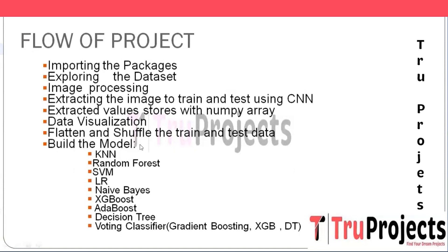The next step is building the models. The first is KNN (K-Nearest Neighbors), a simple and effective classification algorithm that classifies data points based on the majority class among the K nearest neighbors. In this project, it is used to classify brain tumor images based on features extracted from the CNN model. The next is Random Forest, an ensemble learning method combining multiple decision trees to make accurate predictions, built on random subsets of training data and features. It handles high-dimensional data and captures complex relationships, making it suitable for image classification.